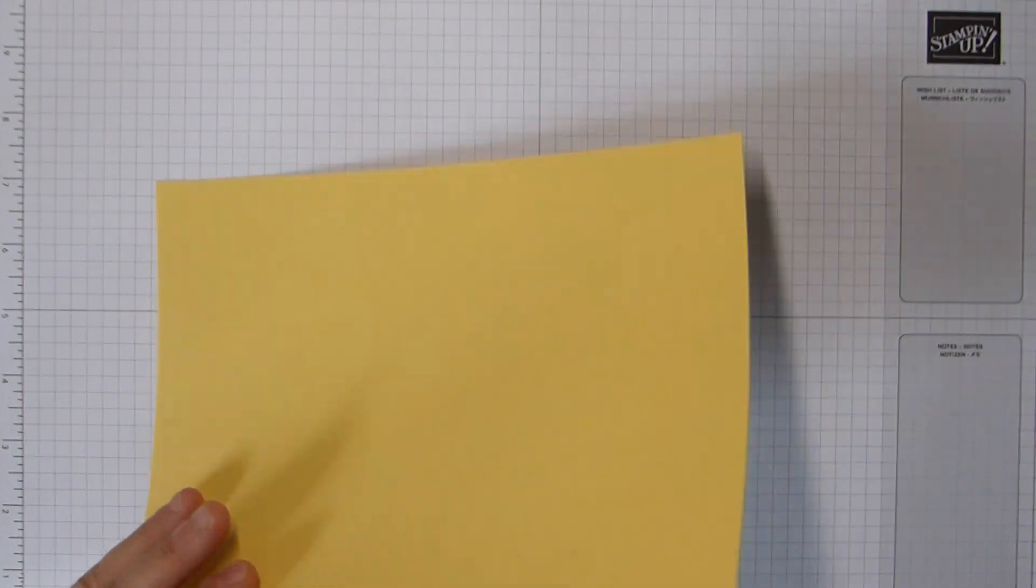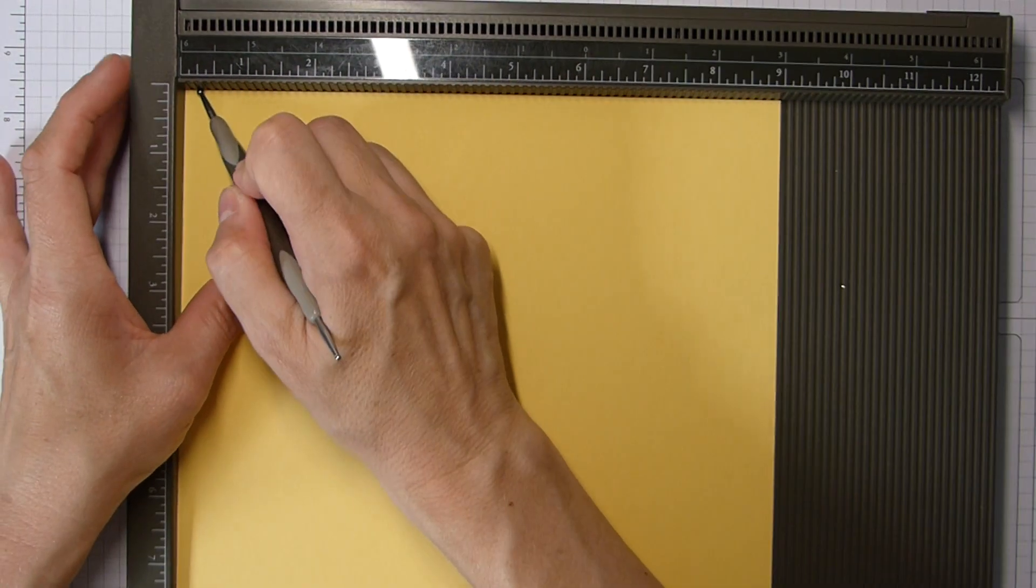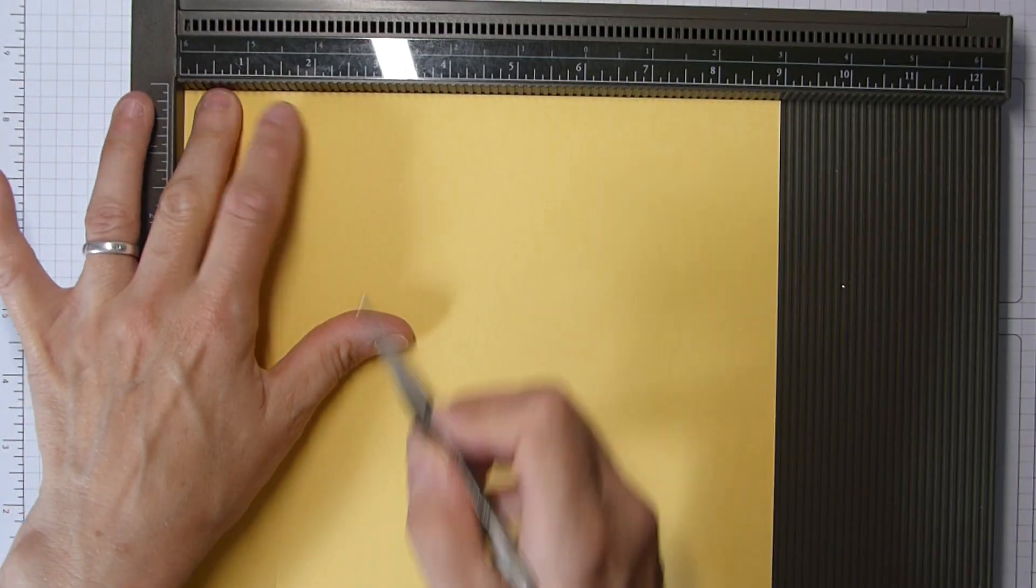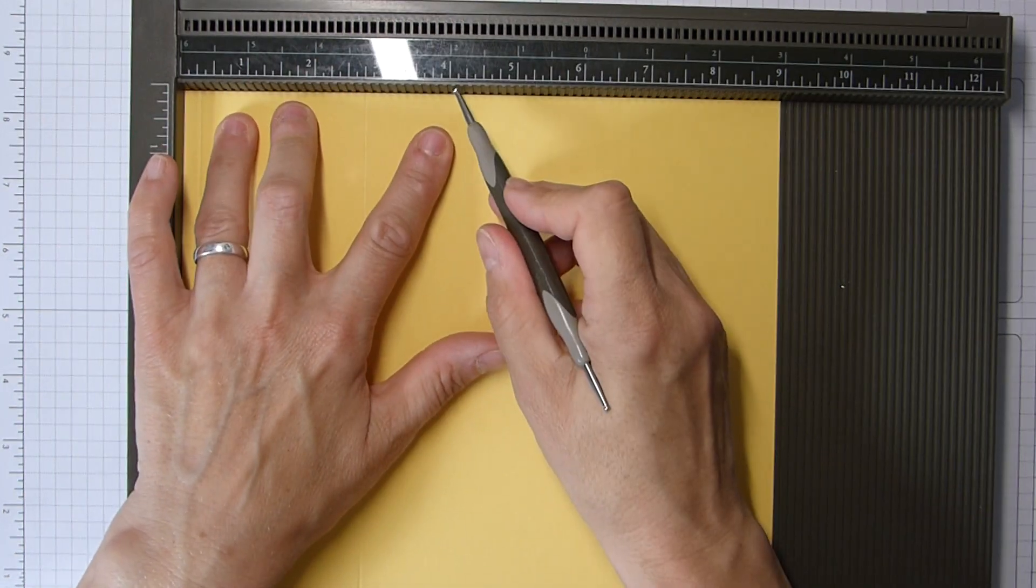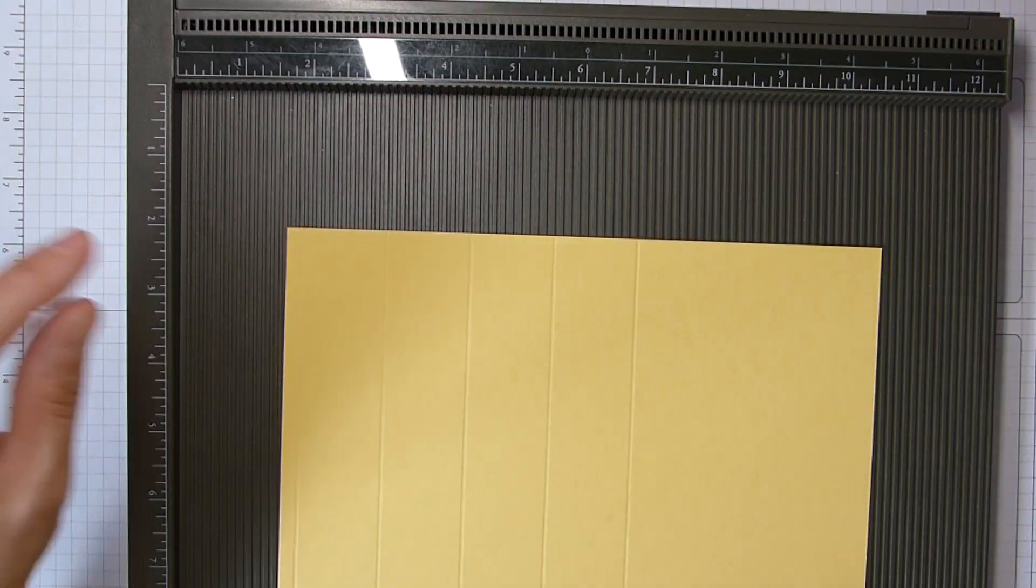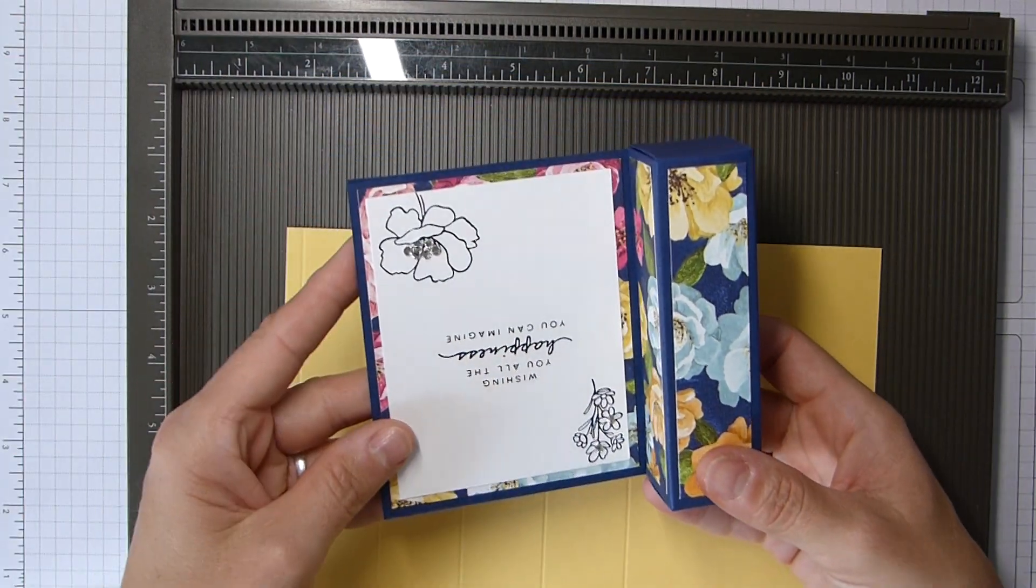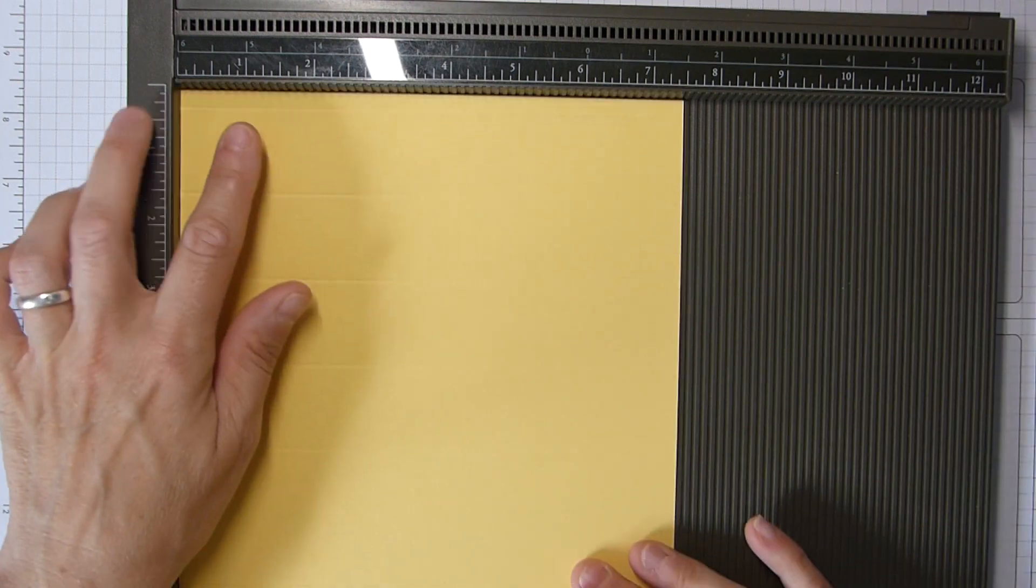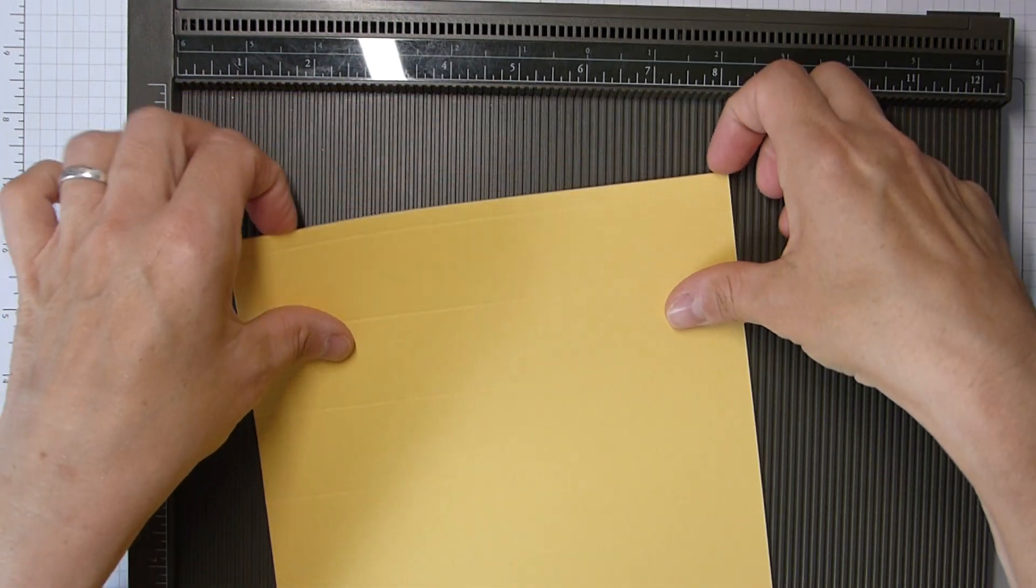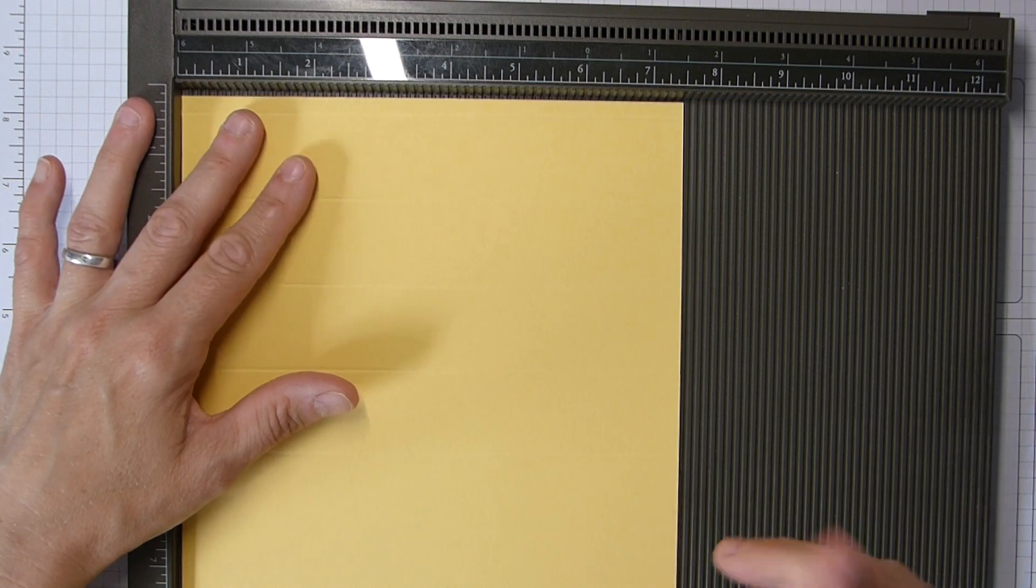To start off with, you need a piece of card that is 9 by 7.5 inches, that's 24.5 by 20 centimeters. On the long side, you want to score at a quarter of an inch, 1.5, 2.75, 4, and 5.25. Then, if you want your box on the right-hand side, which some left-handed people would prefer, you need to put your thin score line, your horizontal thin quarter inch, one centimeter at the top. I just realized I didn't give you those in centimeters, I'll do that in a second.